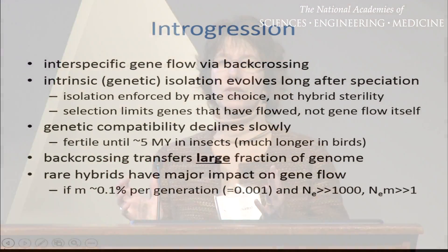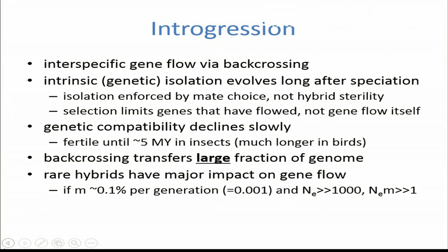We tend to think of species when they arise as being inherently genetically incompatible, but that's clearly not the case. It turns out that isolation is actually enforced by behavior, by mate choice, as opposed to hybrid sterility, which takes a long time to develop. Selection is limiting the genes that have already flowed more so than gene flow itself, and genetic compatibility between newly formed species declines slowly. The ballpark figure bandied about is five million years — it takes about five million years for newly formed species to become genetically incompatible. Backcrossing also transfers a large fraction of the genome, unlike horizontal transfers, so we're talking huge chunks of chromosomes, and although individually rare, hybrids have a major impact on gene flow, especially in species like mosquitoes where population sizes are hundreds of thousands if not millions.